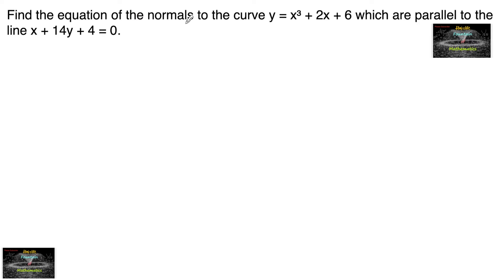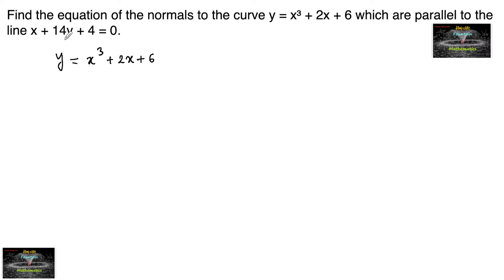Find the equation of the normals to the curve y = x³ + 2x + 6 which are parallel to the line x + 14y + 4 = 0.